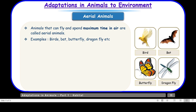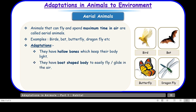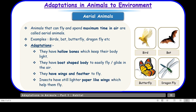Animals that can fly and spend maximum time in air are called aerial animals. Birds, bats, butterflies, and dragonflies fall in this category. These animals have hollow bones which keep their body light, and a board-shaped streamlined body — narrow from both ends but broad from the center — which helps them cut through the air easily. They have wings and feathers to fly. Insects have light paper-like wings which help them in flying.